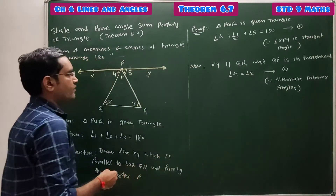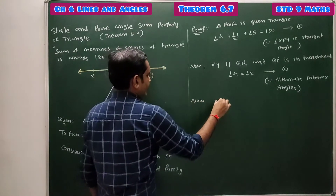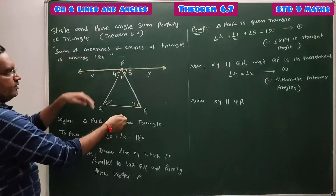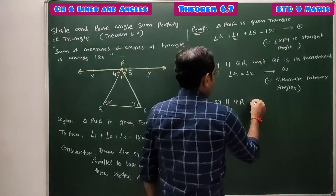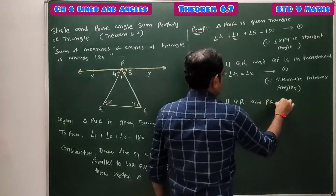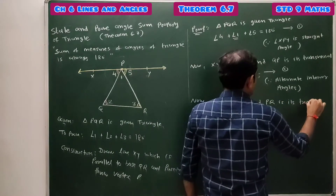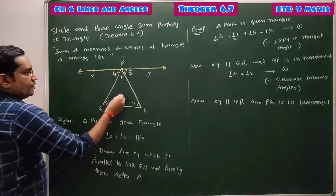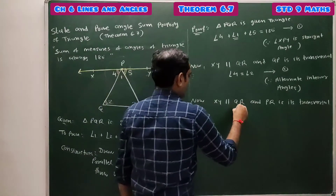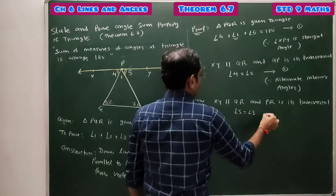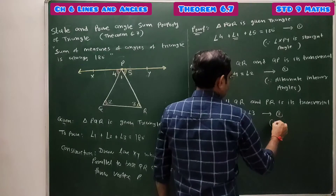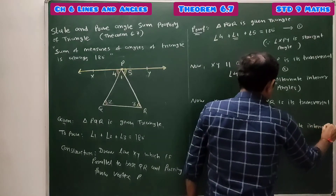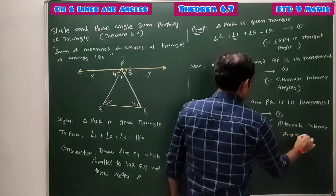Similarly, line XY is parallel to QR, and PR is the transversal. So angle 5 and angle 3 are a pair of alternate interior angles. Therefore, angle 5 = angle 3. This is Result 3. Reason: alternate interior angles.